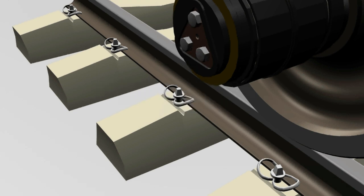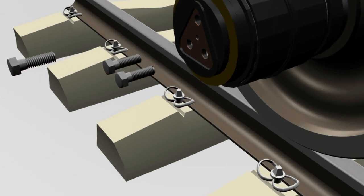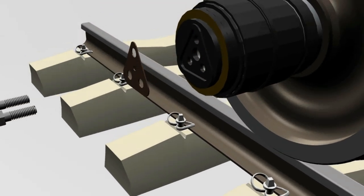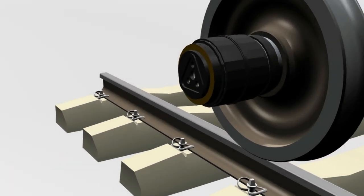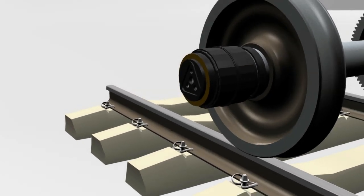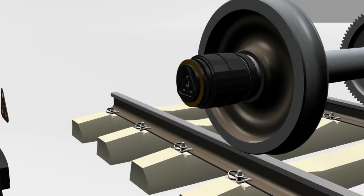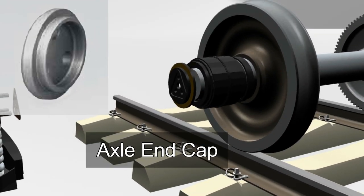First, we twist the cap screw and loosen it. Here is the locking plate. The axle end cap.